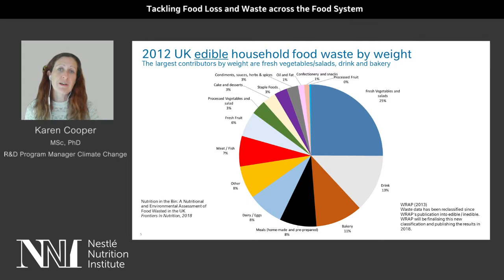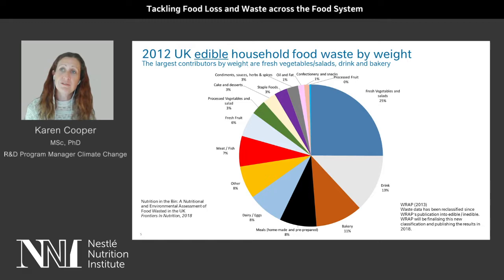We worked with WRAP — the World Waste Resources Action Program in the UK — and they collect household food waste data. They build great reports on food losses at household level. This particular data was from 2012, but subsequent assessments on the same households are similar so it holds true. By weight you can see the biggest losses are fresh vegetables, salads, drinks and bakery.